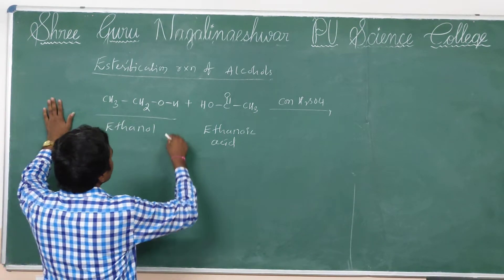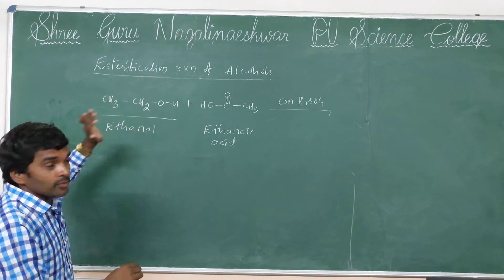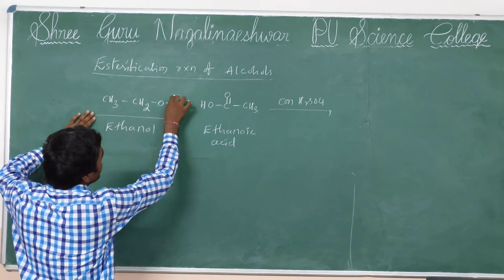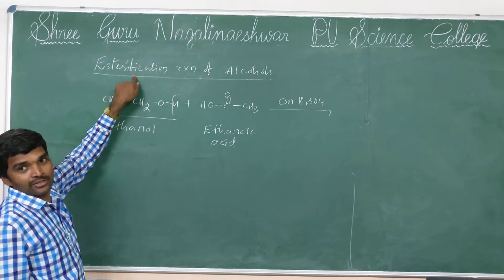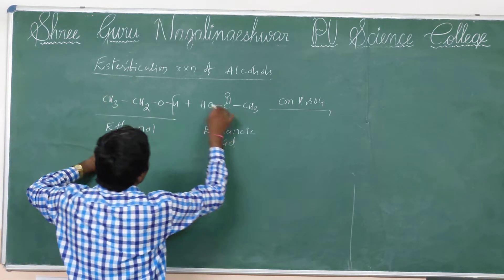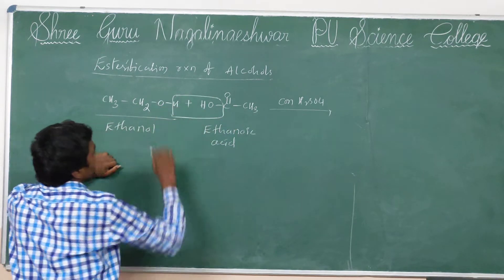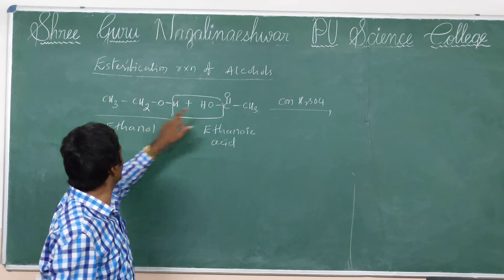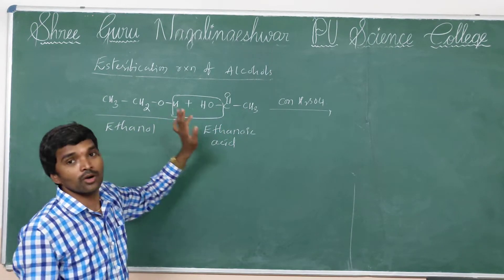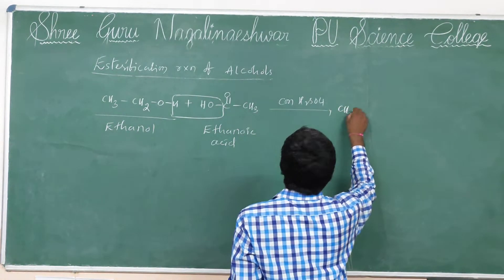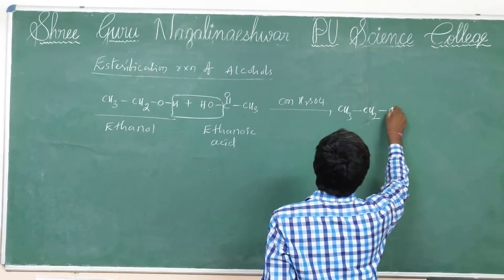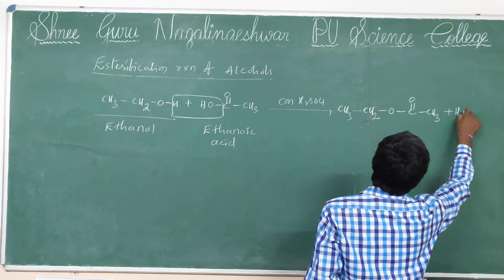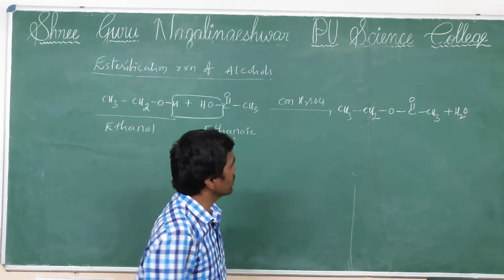A very important thing to remember: from alcohols, oxygen-to-hydrogen bond cleavage occurs in the esterification reaction. In carboxylic acid, carbon-to-oxygen bond cleavage occurs. So carboxylic acid: carbon-to-oxygen bond cleavage; alcohol: oxygen-to-hydrogen bond cleavage. Then formation of CH3CH2O-CO-CH3.